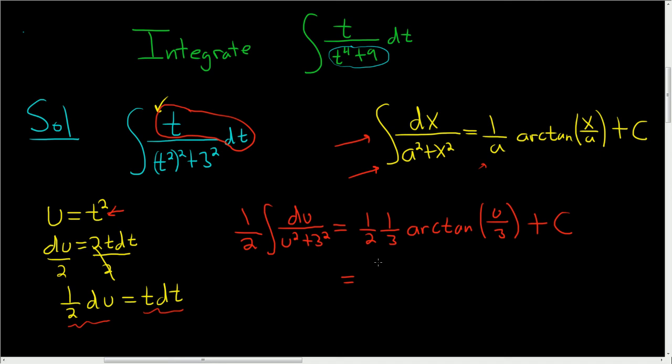So 1 half times 1 third is 1 sixth and then we have arc tan and our u was t squared so this is t squared over 3 and then we still have our constant capital C. And that's it.